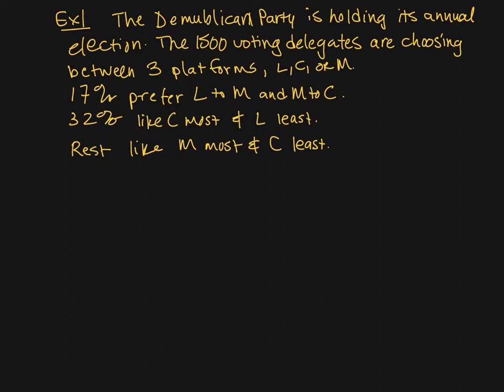Here's our first example. The Demublican Party — a made-up party obviously — is holding its annual election. The 1,500 voting delegates are choosing between three platforms: the liberal platform, the conservative platform, or a moderate platform. 17% of the voting delegates prefer L to M and M to C. 32% of the delegates like C the most and L the least. The rest of the delegates like M the most and C the least. We're supposed to write out the preference schedule first.